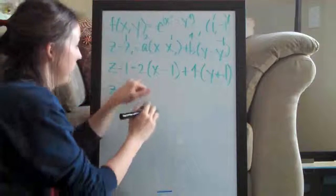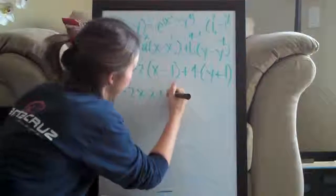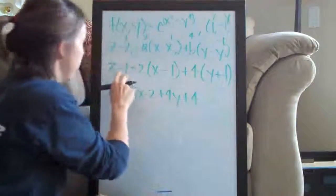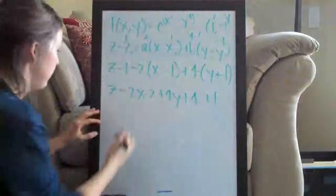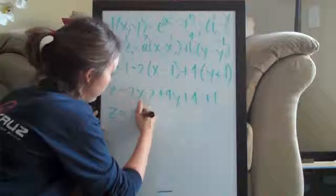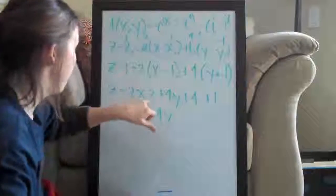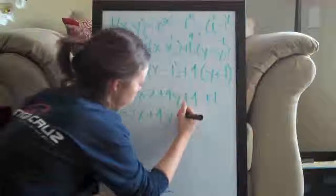So z equals... I'm going to move that over later. Multiply everything out: 2x minus 2 plus 4y plus 4 and then of course add the 1 over because, as you can see, this is going to turn into something much simpler. So z equals... We always do x's first, 2x, then y's plus 4y, and then we have minus 2 plus 4 is plus 2 plus 1 is plus 3.